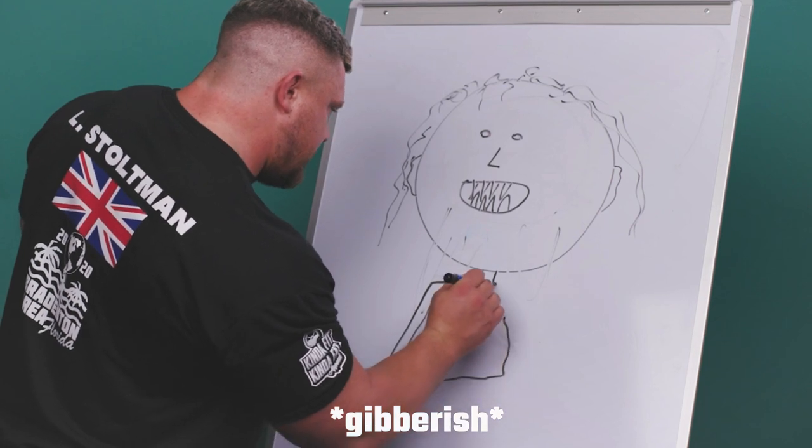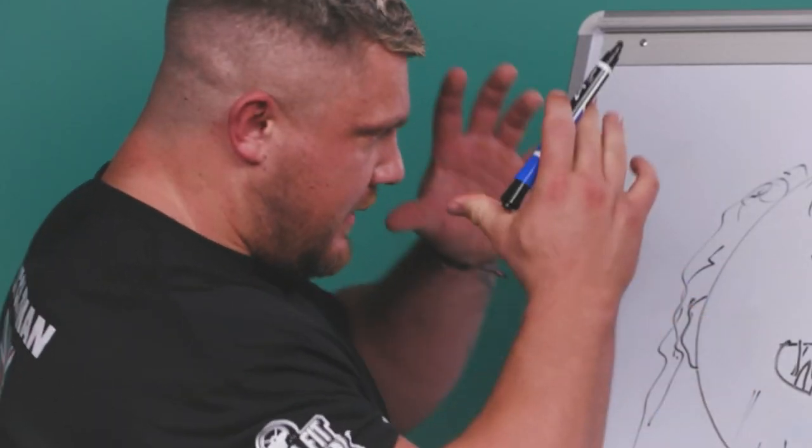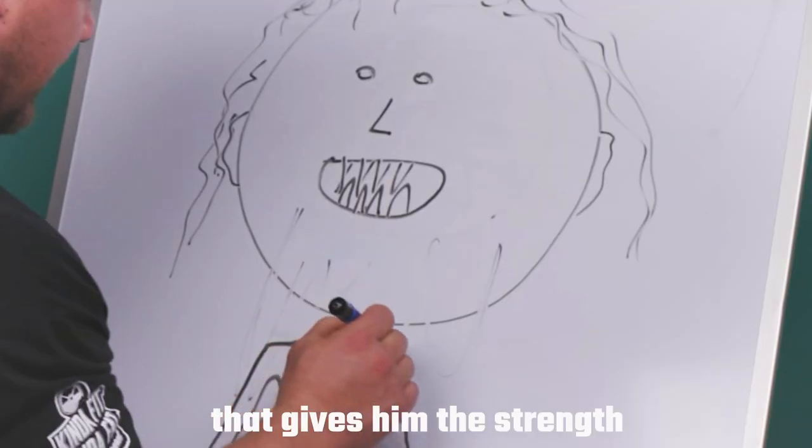Like Robert. The thing with Robert is he's all head. It's mostly his head. That kind of gives him his strength.